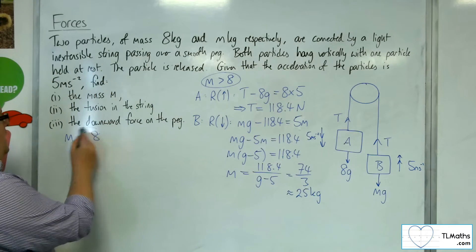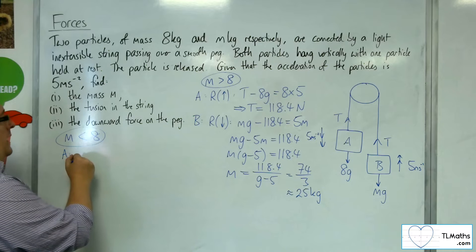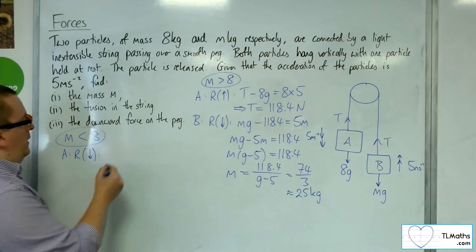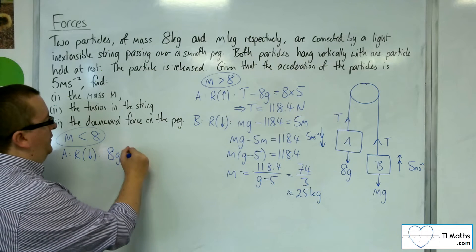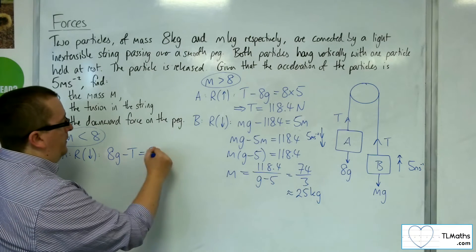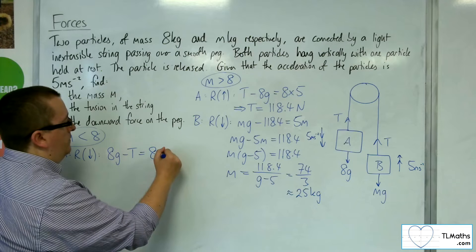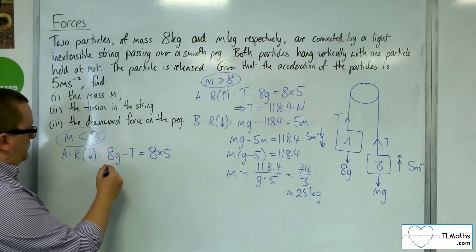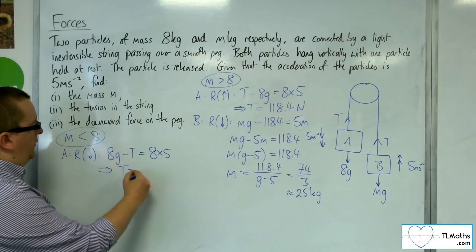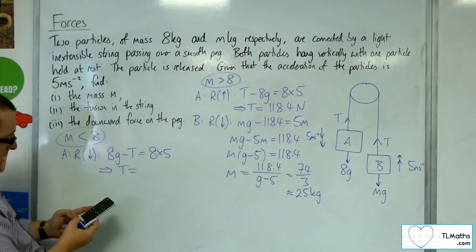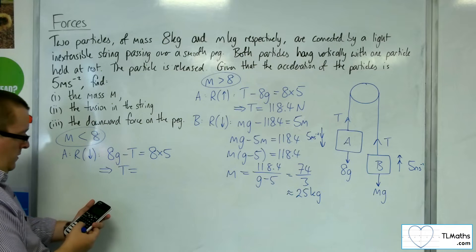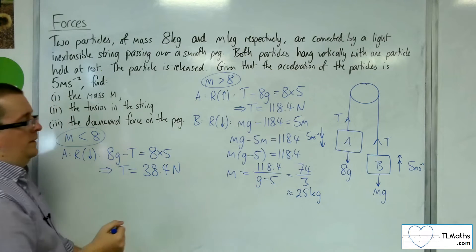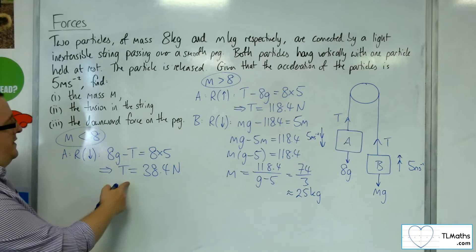So if I now take A, and I resolve taking downwards as positive, I've got 8g minus T is equal to the mass times the acceleration. So that means that T would be 8 times 9.8 take away 8 times 5, which is 38.4 newtons. So there's my tension.